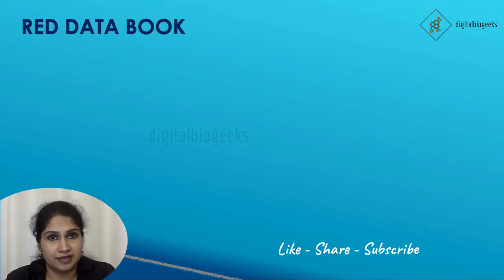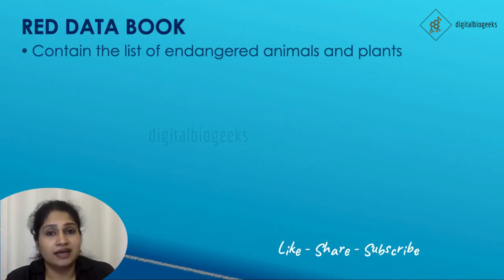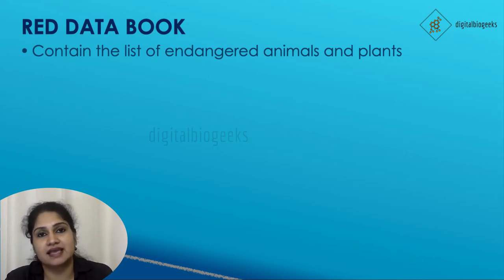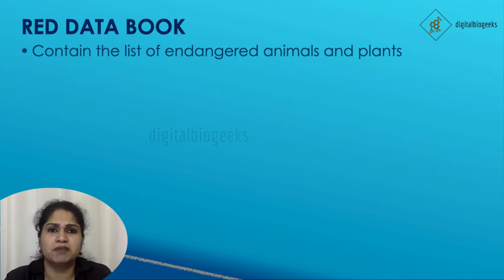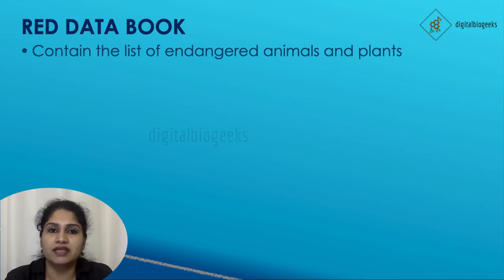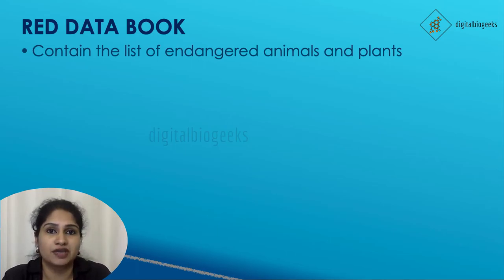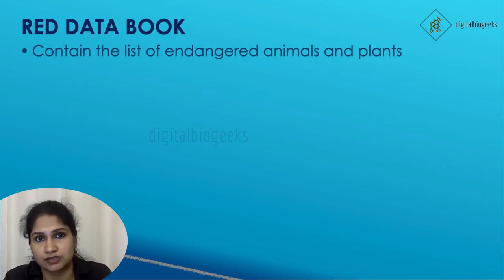Red Data Book contains the list of endangered plants and animals. It is published in many countries and gives detailed information on animals which are facing the threat of extinction.